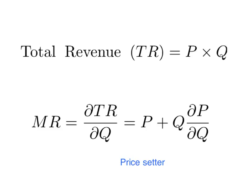If the monopoly wants to sell more, it has to do so by dropping the price. This means dP/dQ — the change in price to sell another unit — must be negative. So for a price-setting firm, the second term in our marginal revenue expression, Q times dP/dQ, must be less than zero.